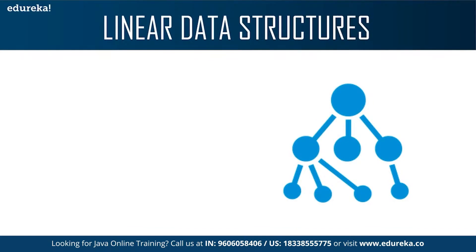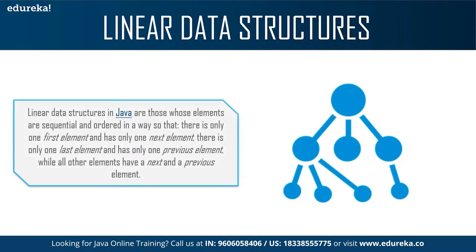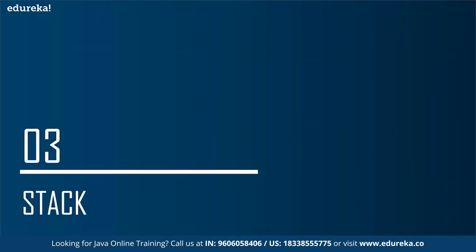Linear data structures are those whose elements are sequential and ordered in a way so that there is only one first element and it has only one next element. There is only one last element and it has no previous element, while all the other elements have a next and a previous element. There cannot be any multiple previous elements or multiple next elements. All other elements have a next and a previous element, and note that there is only one previous and one next element.